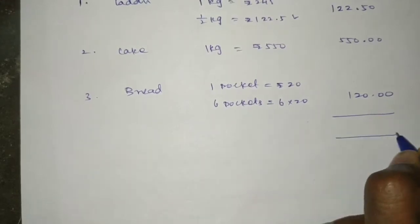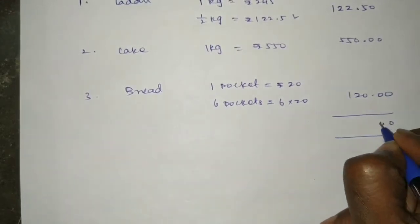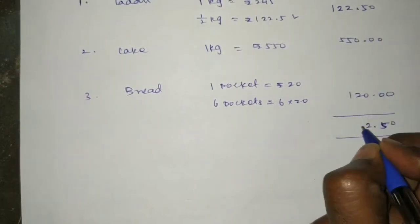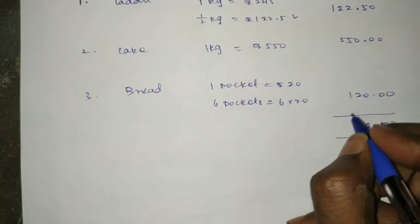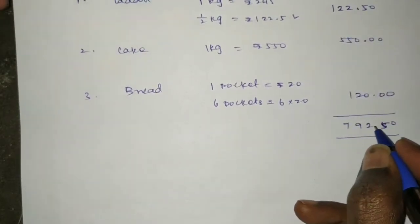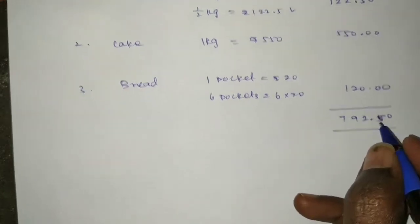Adding all items together: 122.50 plus 550 plus 120, the total cost is 792.50 rupees.